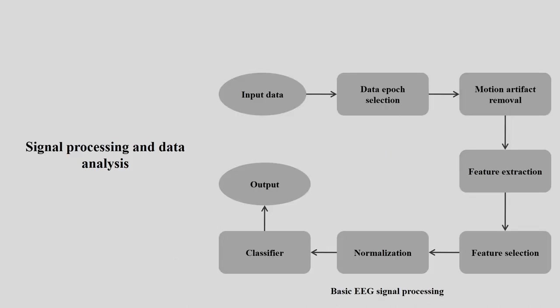The EEG signal processing pipeline is: input data → epoch selection → motion artifact removal → feature extraction → feature selection → normalization → classification → final output. This is the basic flow of EEG signal processing.